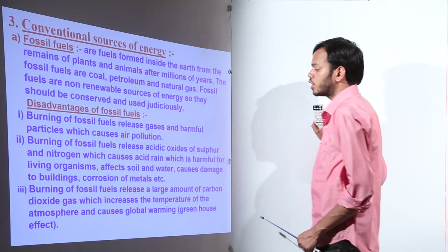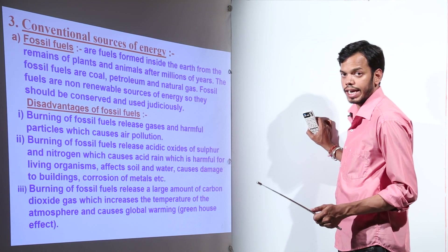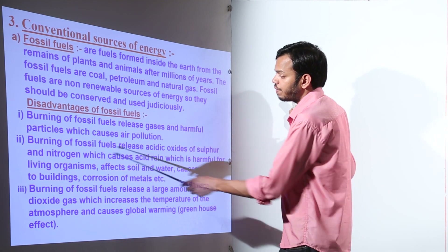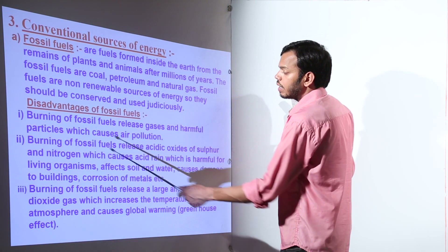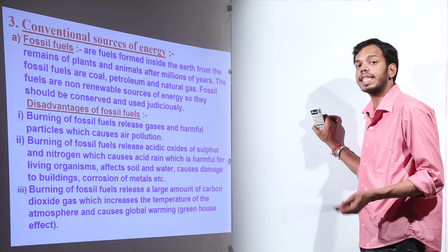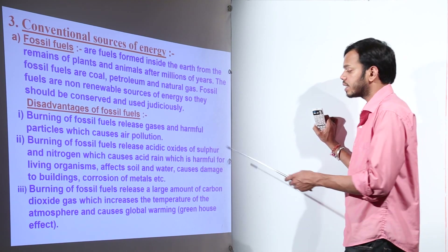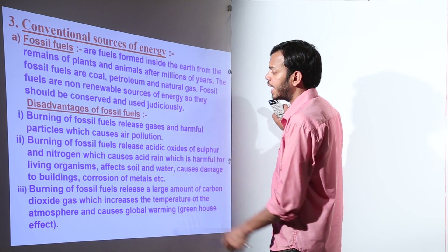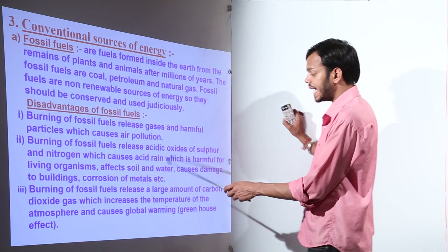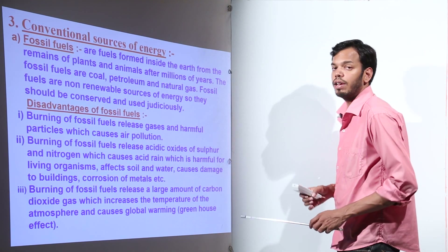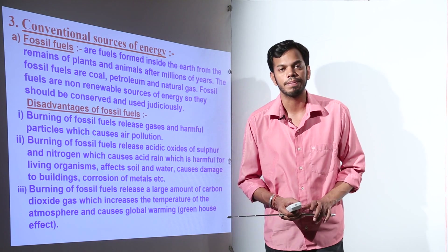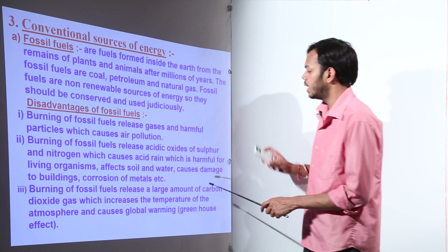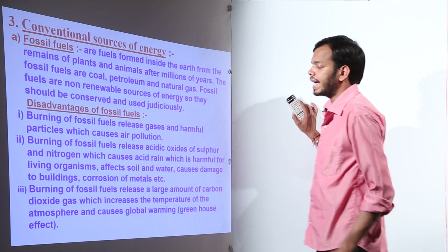Burning of fossil fuels also releases acidic oxides — sulfur oxides and nitric oxides. These oxides of sulfur and nitrogen dissolve to form sulfuric acid and nitric acid, which causes acid rain, which is harmful for plants, animals, and the entire atmosphere.